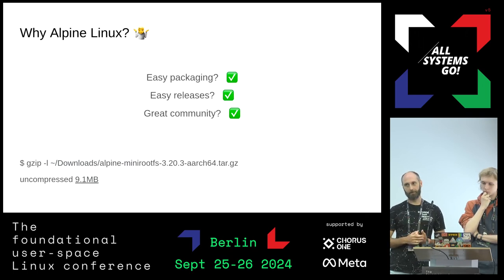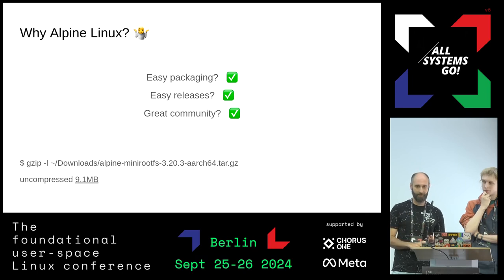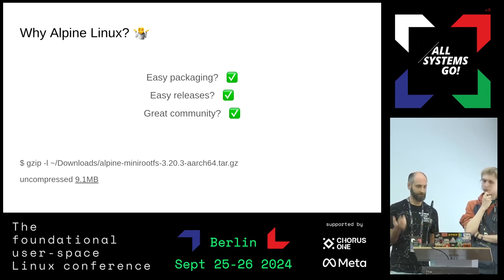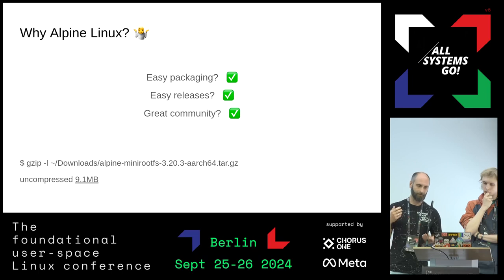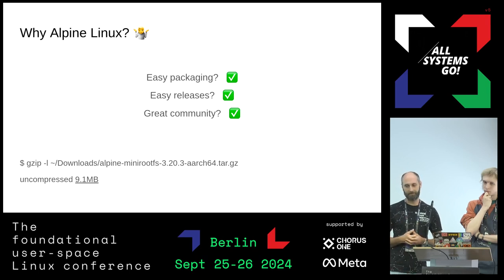One thing we get asked a lot — and even asked ourselves — when looking at using systemd in PostmarketOS, is: why Alpine Linux? It uses a different libc that systemd doesn't support, and it's known for use in containers rather than bare metal. There are a lot of reasons people could say why we shouldn't use it, and if we were going to try to use systemd, it would have probably been easier to just use a distro that already had it. But we feel there's a lot of benefit to using Alpine that makes it worth the extra effort.